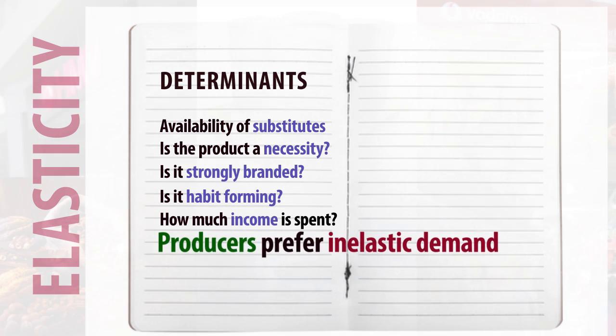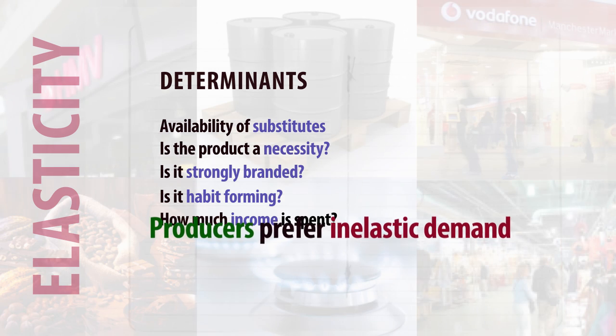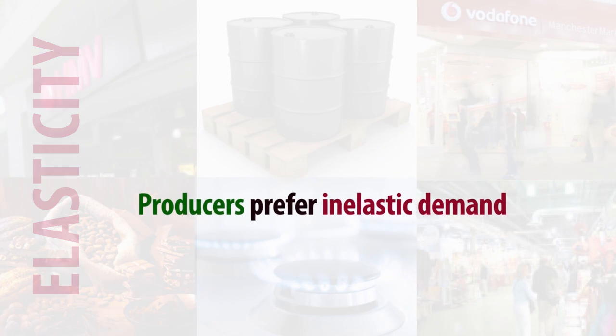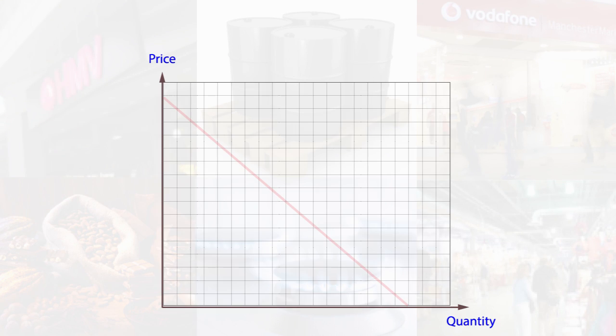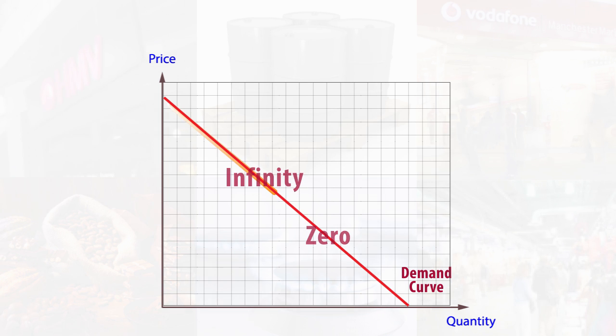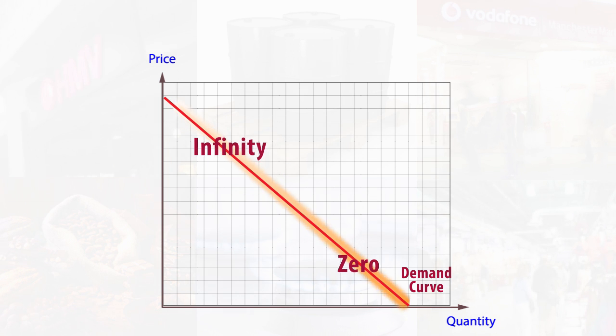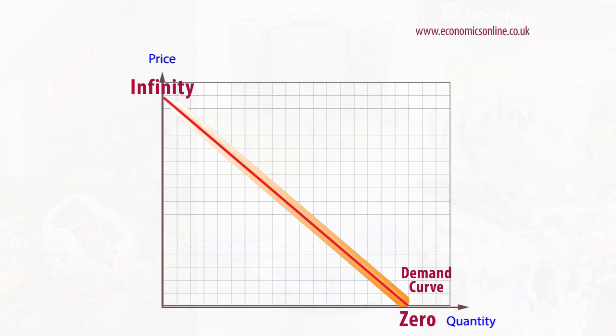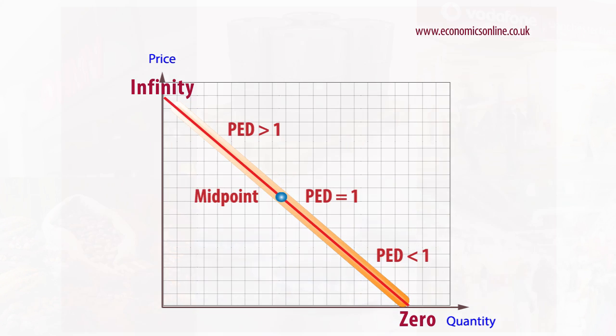Producers would prefer an inelastic demand. PED on a linear demand curve will fall continuously, with a midpoint equaling 1.